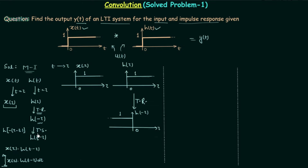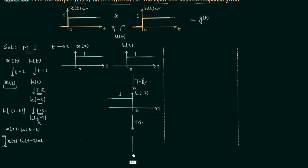In step 3 we perform the time shifting. We consider t to be such that the signal waveform shifts towards the left. After shifting, the waveform of h(t−τ) ends at the instant t. This is the waveform of h(t−τ), and we are done with step 3.